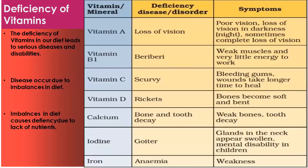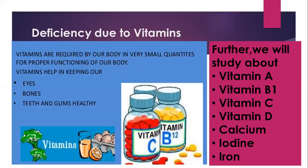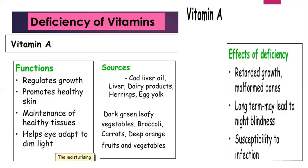Now we are going to see deficiency of vitamins, which is very important in this chapter. The deficiency of vitamins in our diet leads to serious diseases and disabilities. It occurs due to imbalance in diet — if you are not taking a proper balanced diet, deficiency may occur. We will discuss vitamin A, vitamin B1 (also called thiamine), vitamin C, vitamin D, calcium, iodine, and iron. Vitamins are required by our body in very small quantities, but every vitamin and mineral is essential to protect from deficiency diseases.